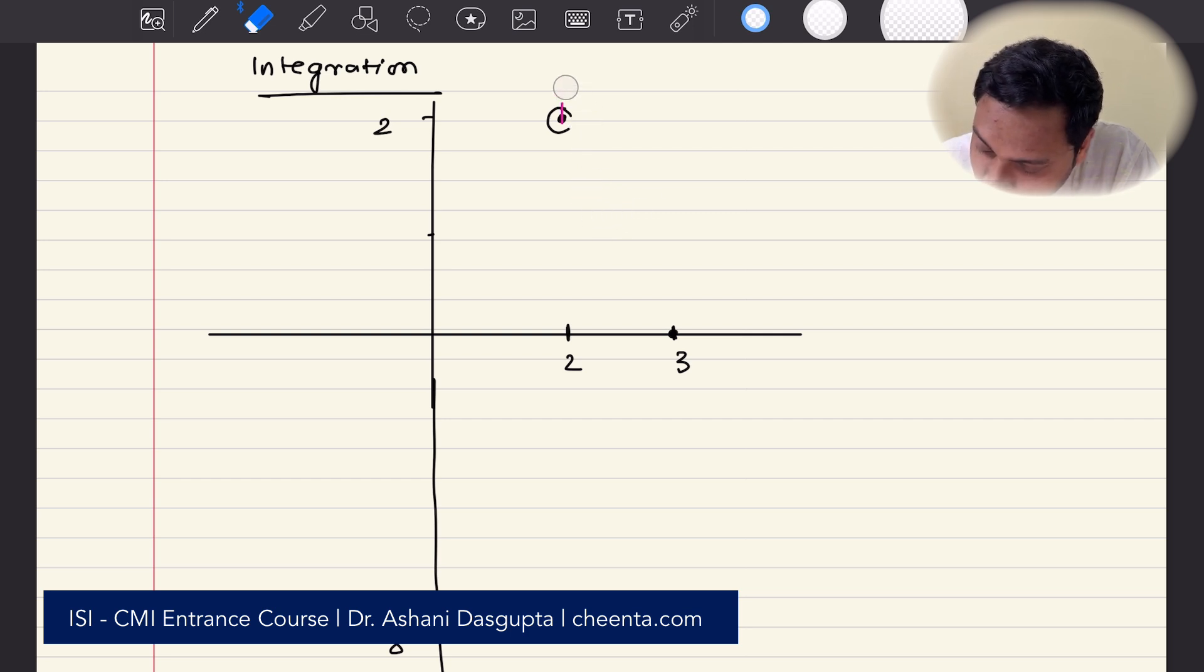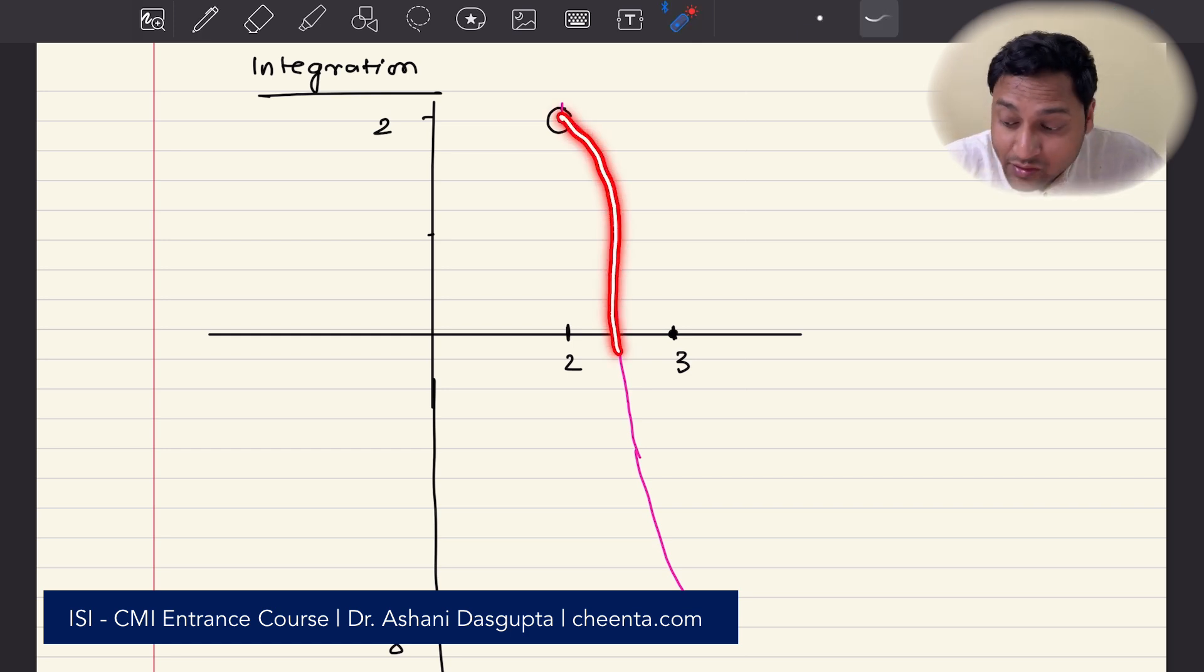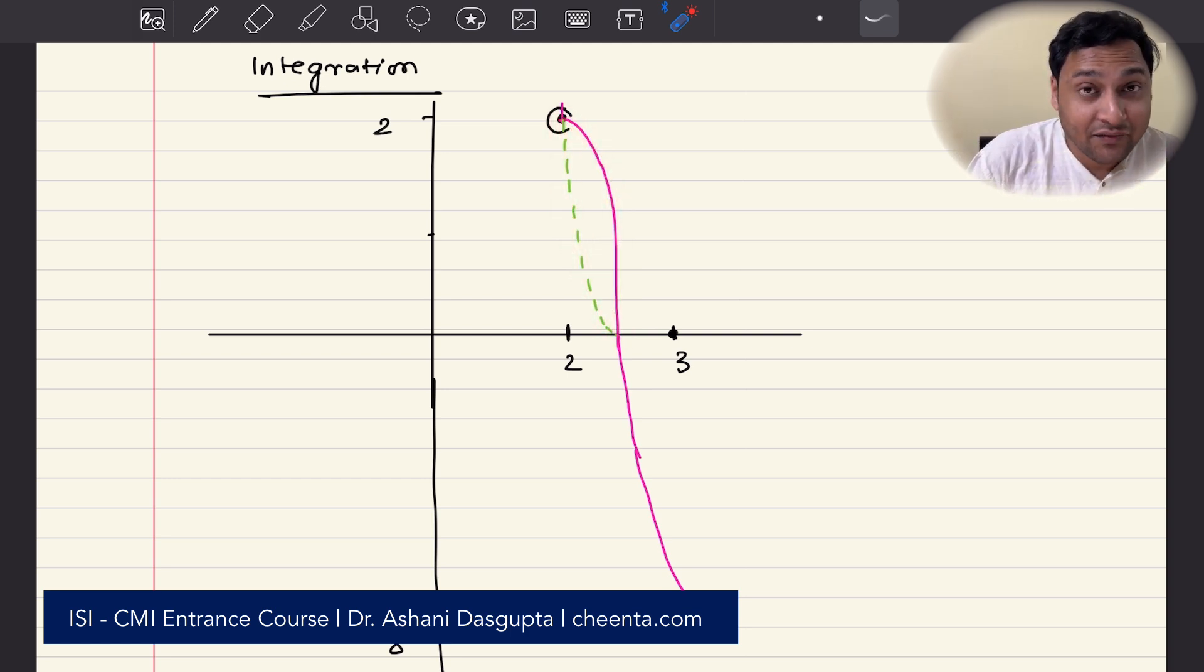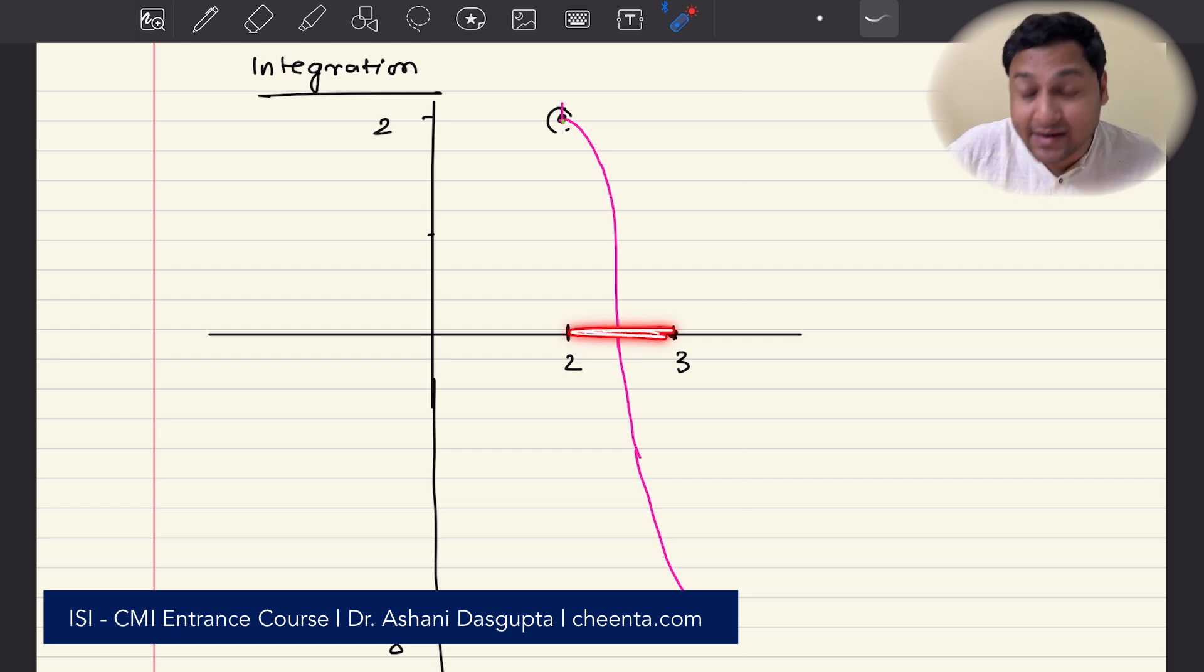So, for two different values of x, you will get the same value of y, which we cannot have because the function is 1 to 1, right? Okay, so this is not possible. So, what we are going to do is, we will draw the function. The waves are not there. It doesn't go up and down. It only goes down like this. So, it's probably like this. We don't know for sure. There are some features of this curve that we are not aware of, actually. Is it like this? Or, is it like this? That we do not know because we need more information about the function.